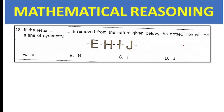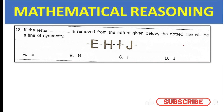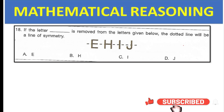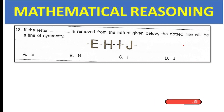If the letter dash is removed from the letters given below the dotted line, the dotted line will become a line of symmetry. The answer is D — letter J does not have equal images on both sides of the line, so we should remove J.